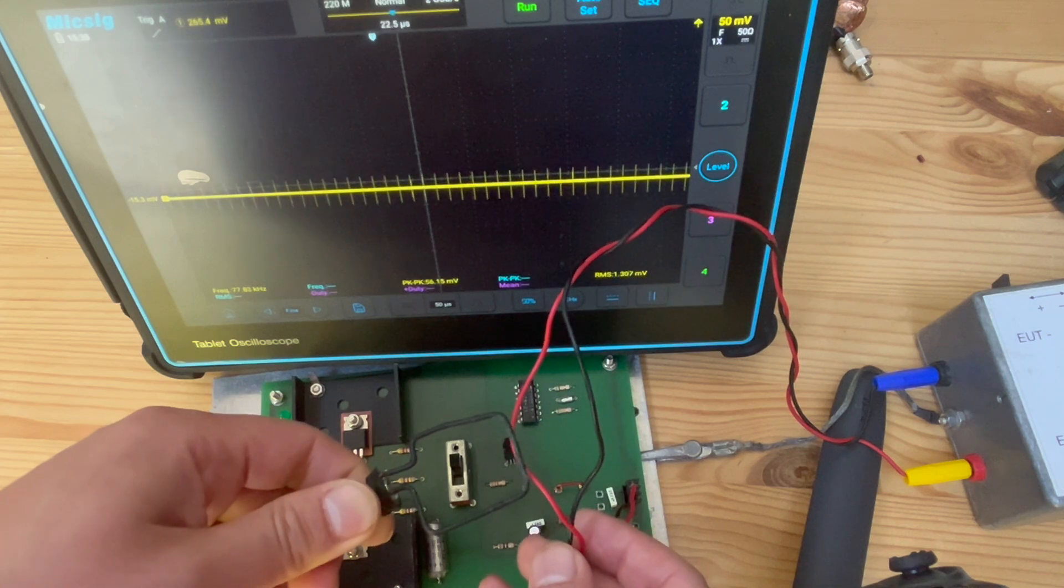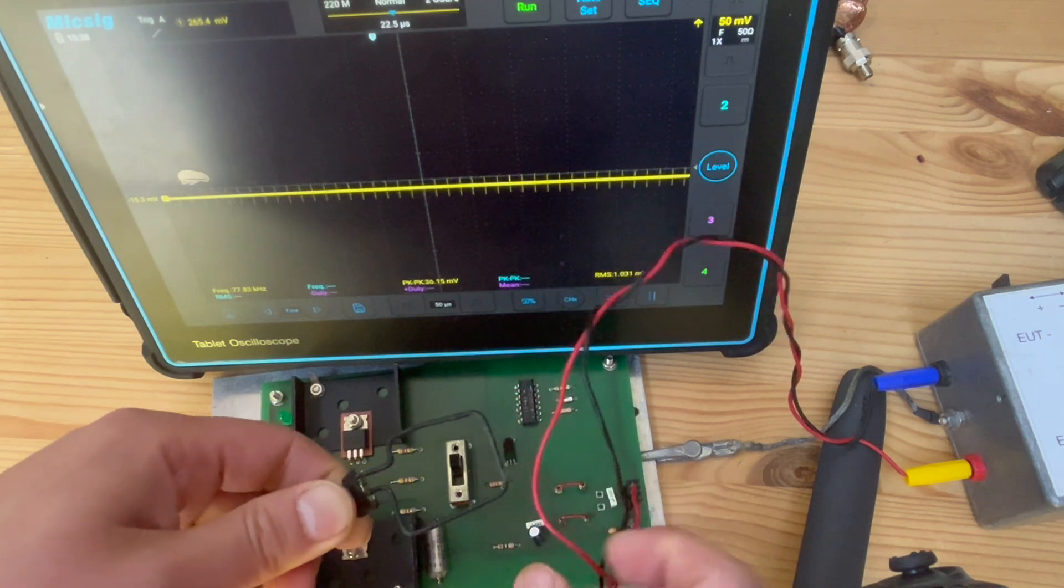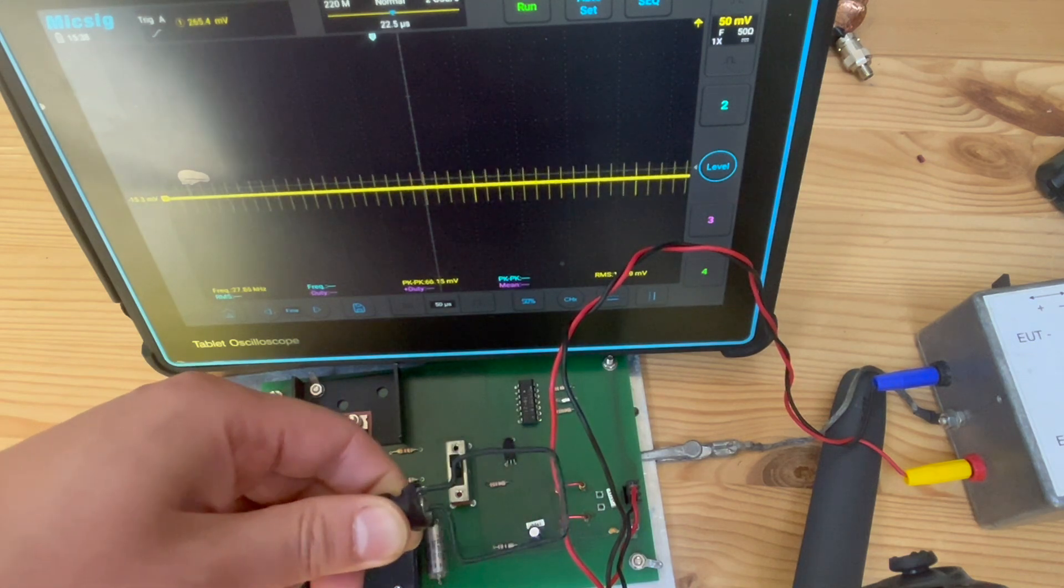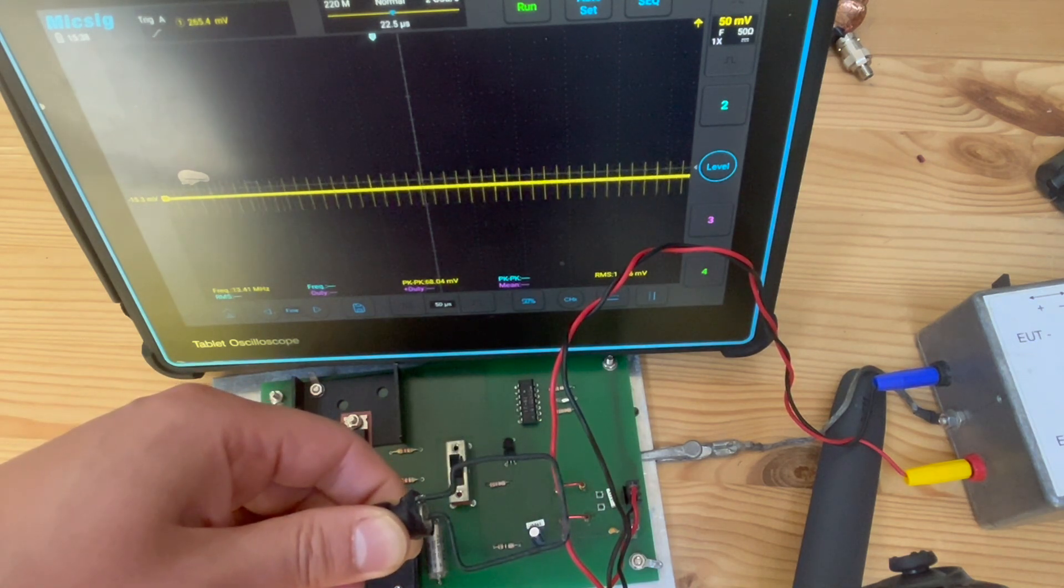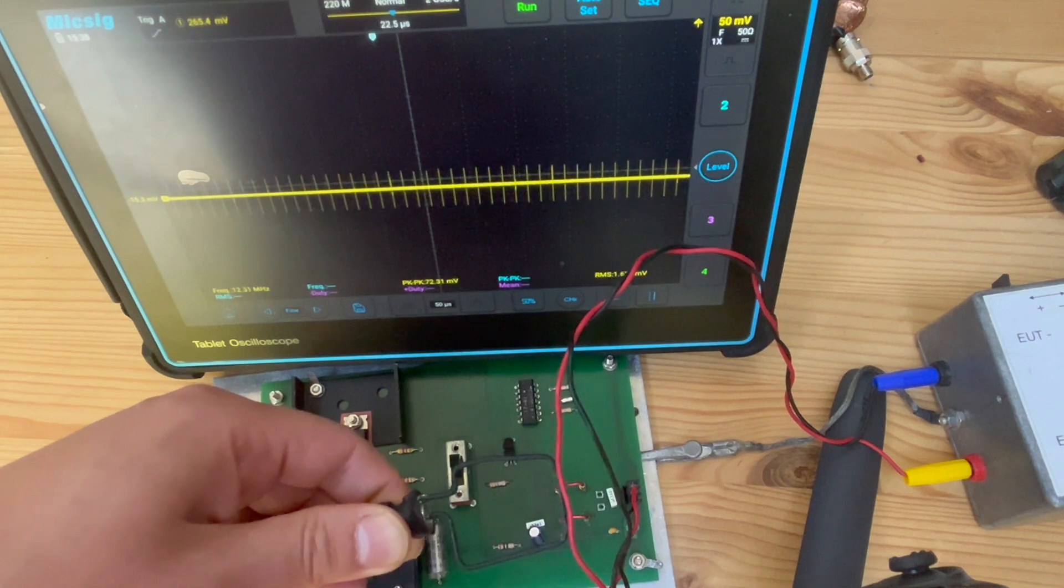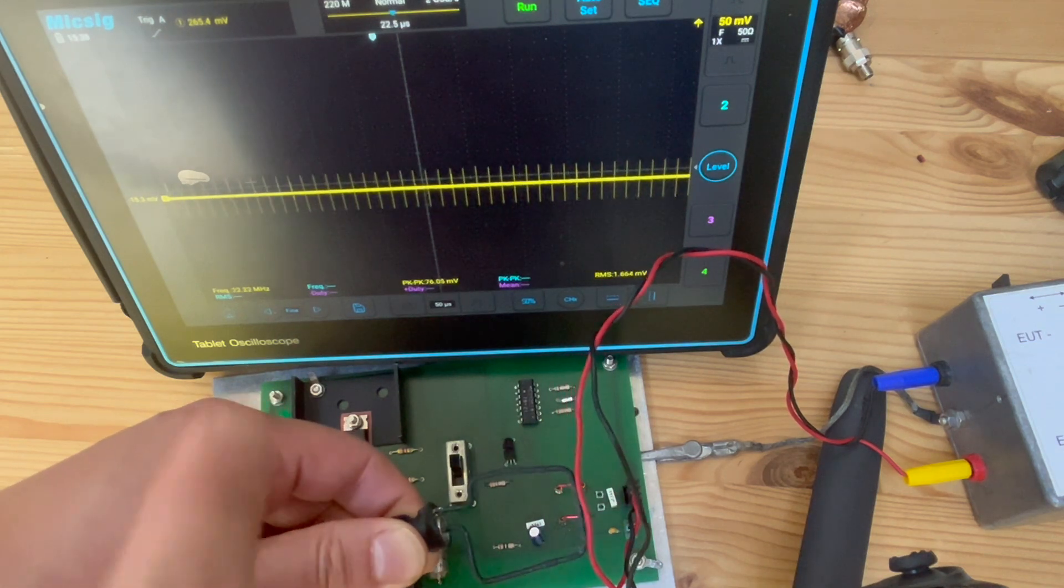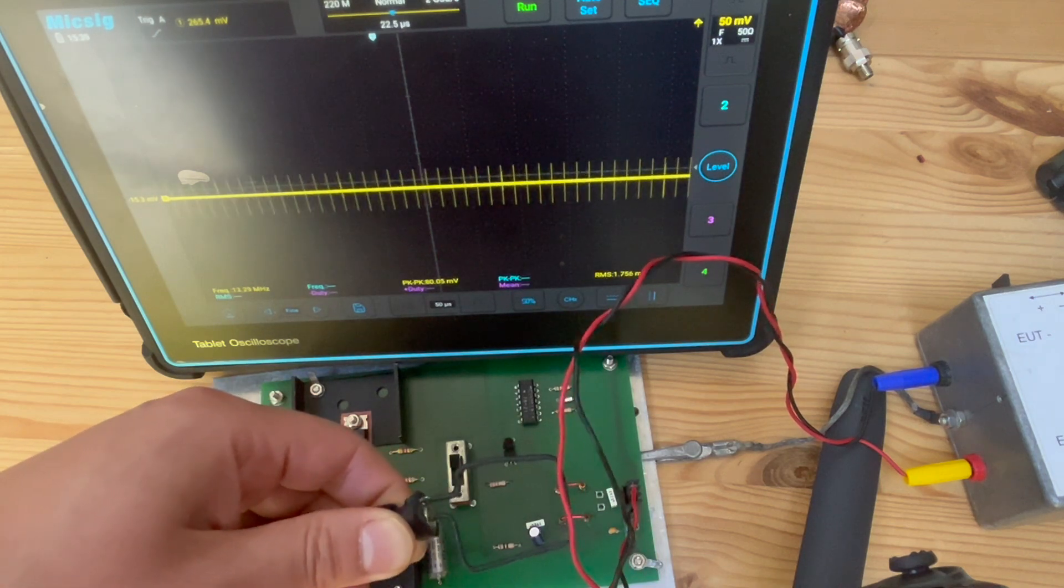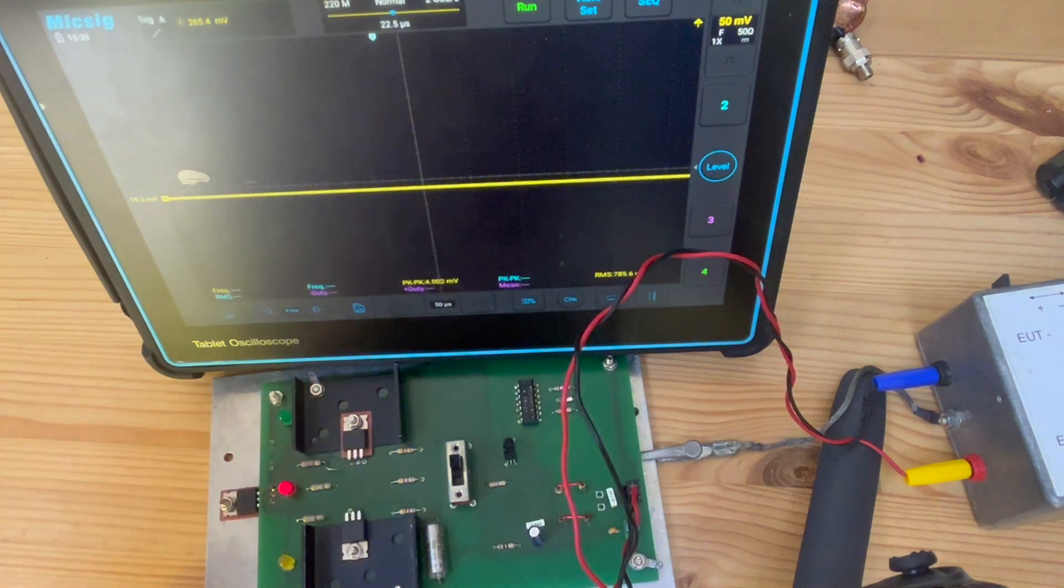This is what we call magnetic field coupling. If I get really close, you can see the level on the scope. That's sort of the level we're talking about. This is what we got if I just use a near-field probe like that.